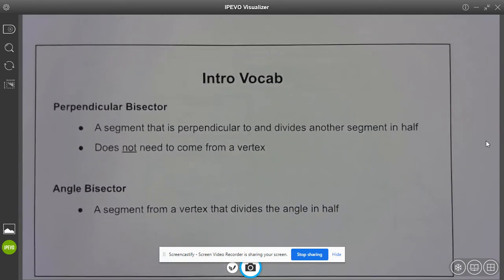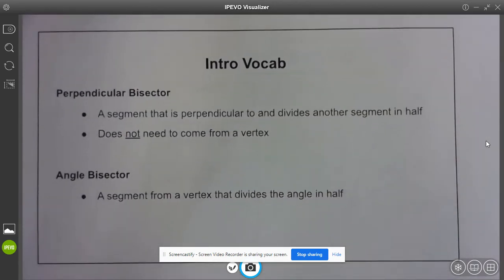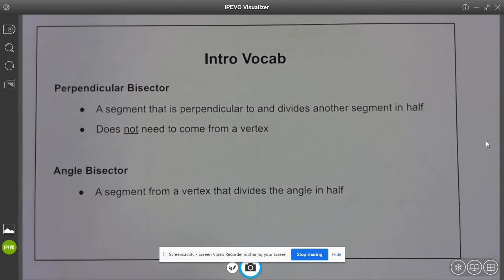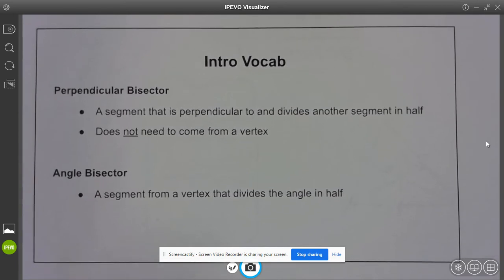So some things we need to know first, we need to know what a perpendicular bisector and an angle bisector are. These should sound familiar from math two, but just to remind you, one important thing for a perpendicular bisector is it does not have to come from the vertex.